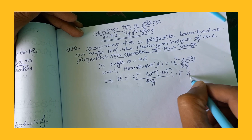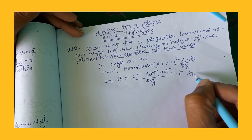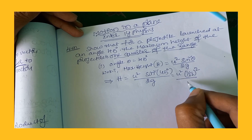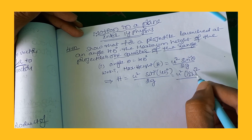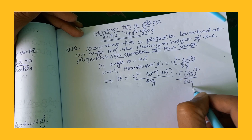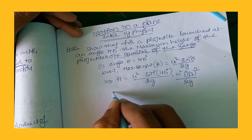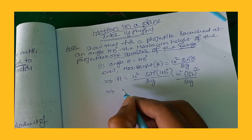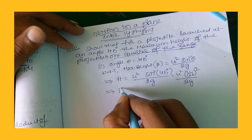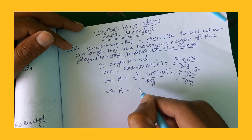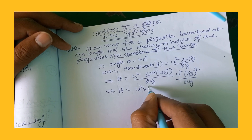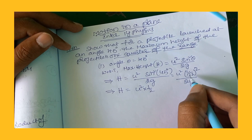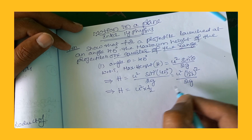Since sine 45 degrees equals 1 over root 2, squaring that gives 1 by 2. So this implies H equals u squared times 1 by 2, divided by 2g.